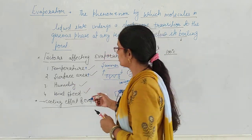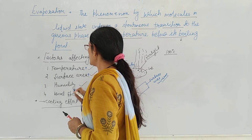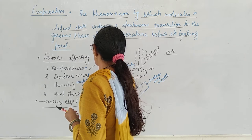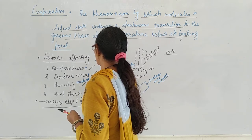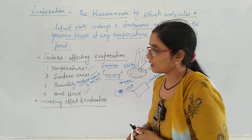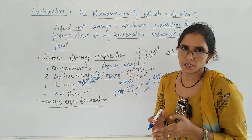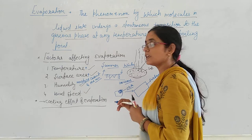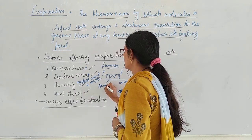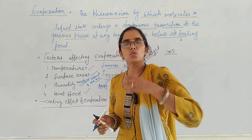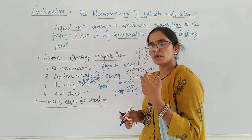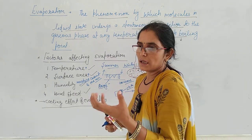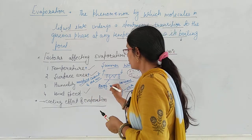The next factor is humidity — the moisture content of the air. Moisture means the water content present in the air. For example, if you wash clothes in summer they dry up, but if you wash them in the rainy season it takes more time, because in the rainy season the air is already full of moisture.